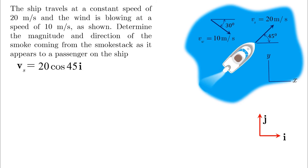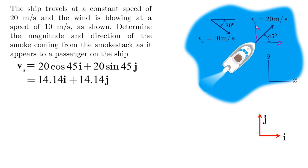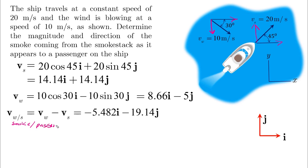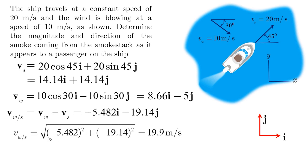The velocity of the ship is 20 cosine 45 i plus 20 sine 45 j. For the wind, it's 10 cosine 30 i and 10 sine 30 in the negative j direction. We subtract Vs from Vw — the velocity of the wind with respect to the ship, which is the velocity of the smoke with respect to the passenger — it's the same thing. The result has two negative components: negative i and negative j. We find the magnitude using the square root of the sum of squares of both components, since they are normal to each other, giving 19.9 meters per second.